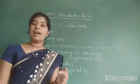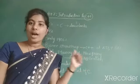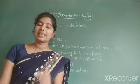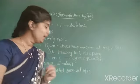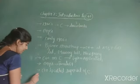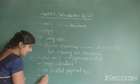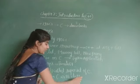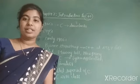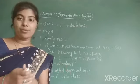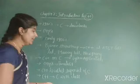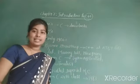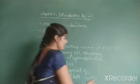Any valid code written in C language is also valid in C++ language, hence it is called a superset of C. Earlier, C++ language was called 'C with classes'. In 1983, it was renamed as C++ by Rick Mascitti.